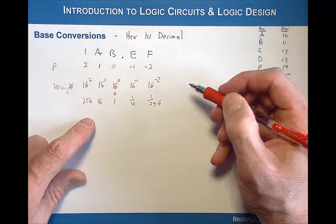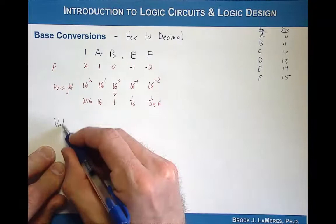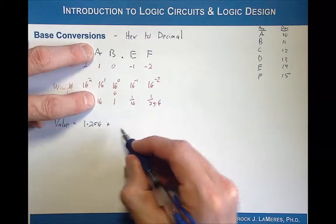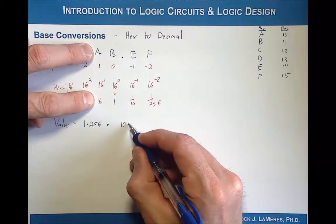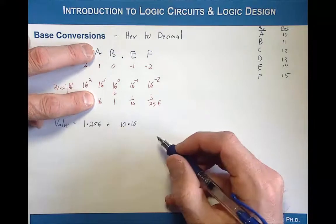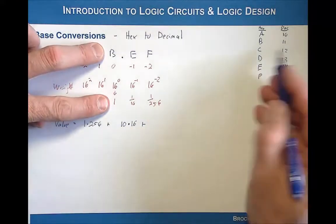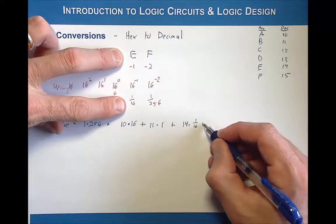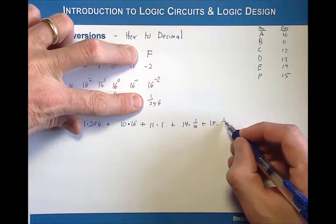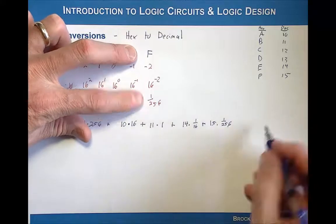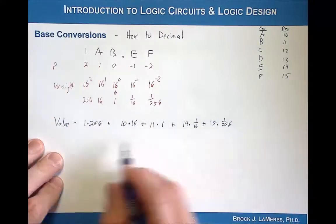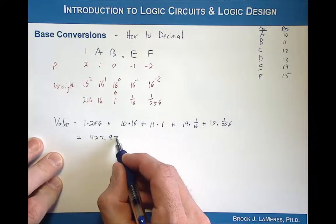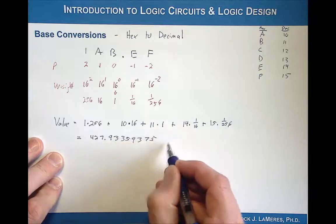Now ready to do the multiplication. The value is the digit multiplied by the weight: 1 multiplied by 256, plus A (which is 10) multiplied by 16, plus B (which is 11) multiplied by 1, plus E (which is 14) multiplied by 1 over 16, plus F (which is 15) multiplied by 1 over 256. Summing all of these together, the result is 427.93359375 base 10.